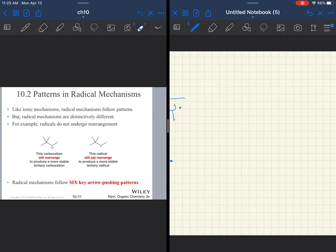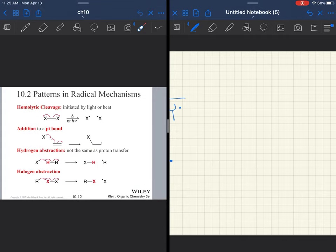Now, there are patterns in our radical mechanisms. I'm going to go through them quickly because we are going to take a look at them more specifically when we get into an actual reaction. So we're just going to go through these six rather quickly.